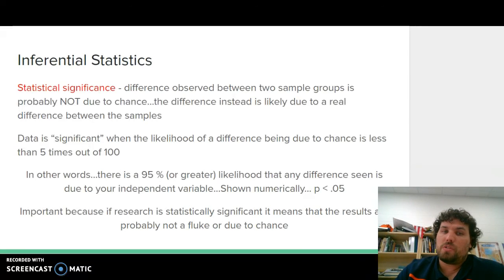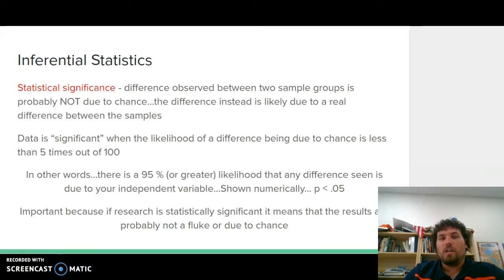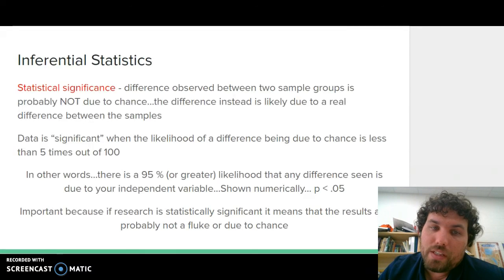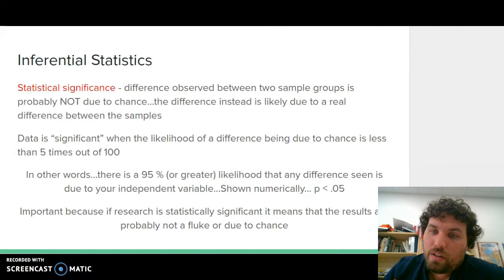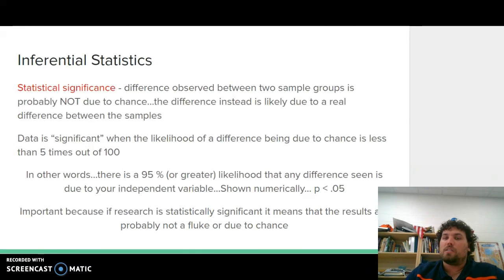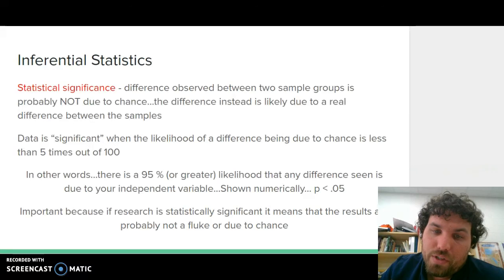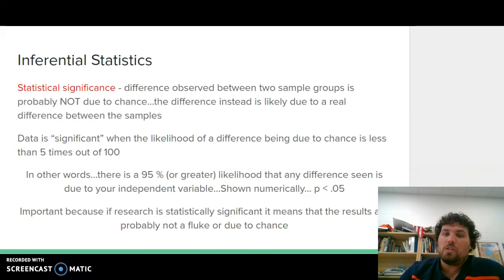With inferential statistics, pay really close attention to statistical significance — the difference observed between two sample groups is probably not due to chance; it's likely due to a real difference between the samples. The data is significant when the likelihood of a difference being due to chance is less than five out of a hundred. In other words, there is a 95% or greater likelihood that any difference seen is due to your independent variable. Numerically, P is less than 0.05. If research is statistically significant, the results are probably not a fluke or due to chance — they are on purpose.